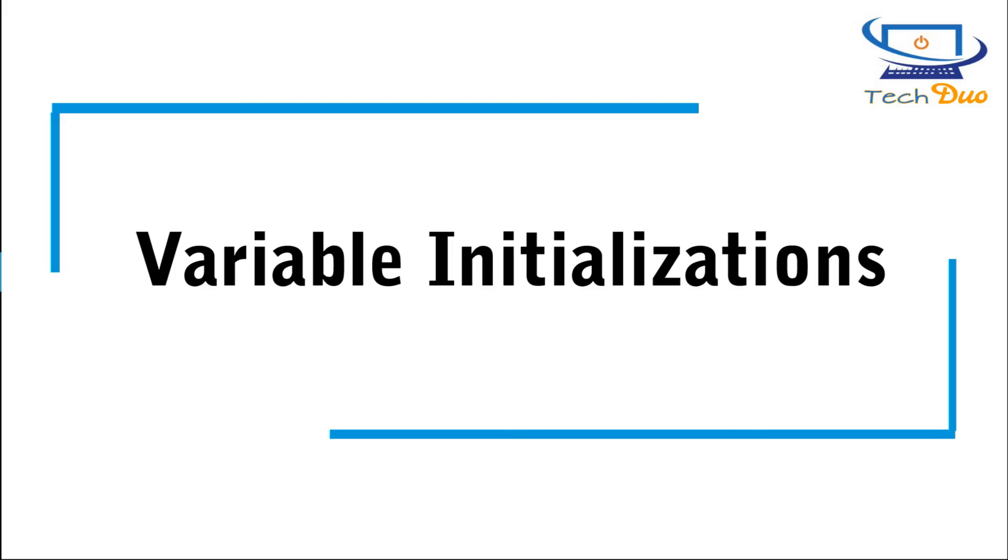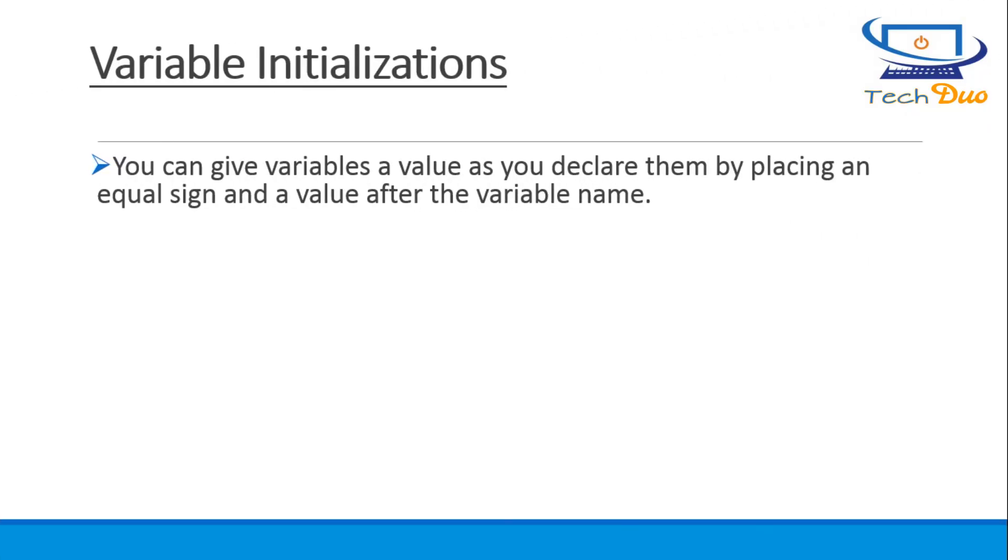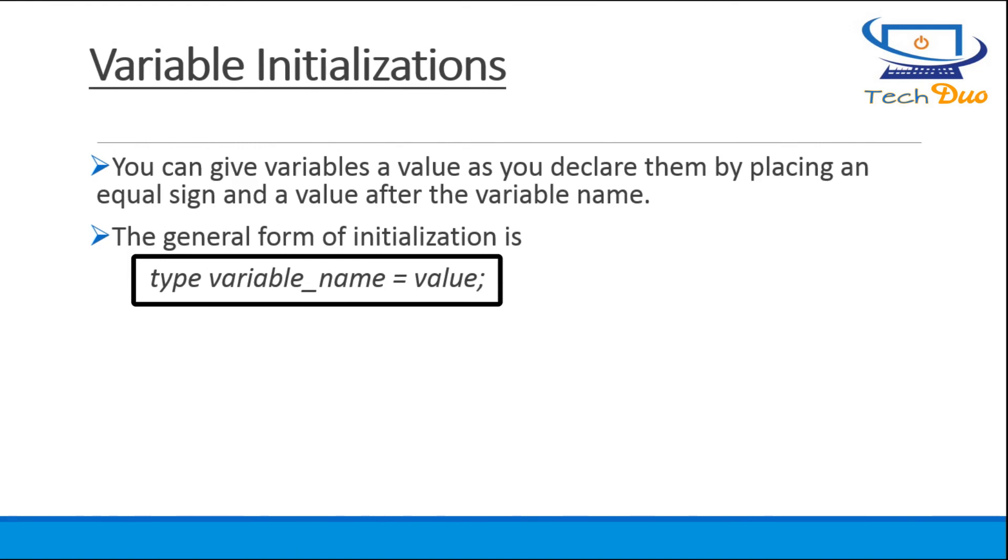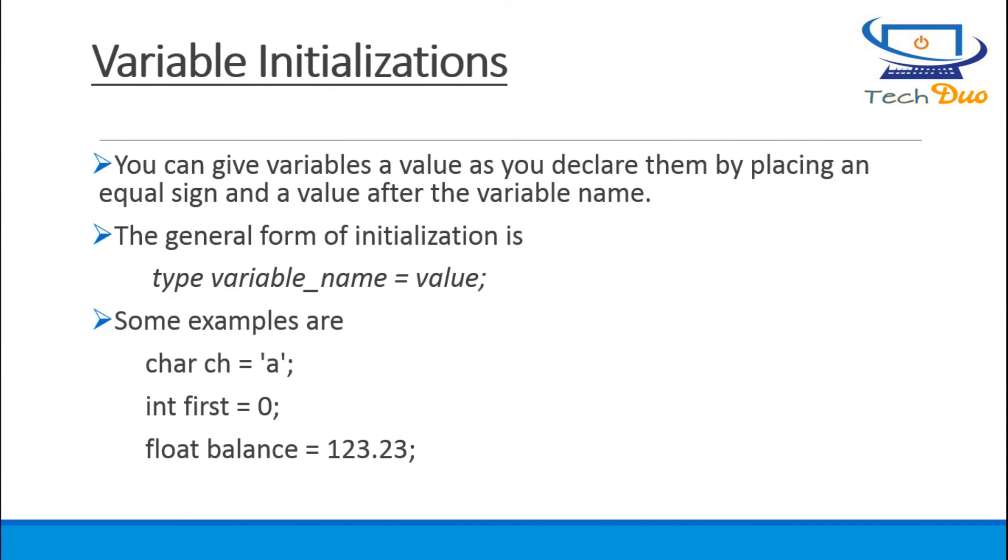Variable initializations. You can give variables a value as you declare them by placing an equal sign and a value after the variable name. The general form of initialization is type, variable name, equal to, value. Some examples are shown.